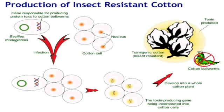Let's see how the BT toxin is produced. This BT toxin gene is first isolated from the bacterium Bacillus thuringiensis and it is incorporated into the cell of a cotton. So, this BT toxin gene is now bound to the nucleus of the cotton cell.